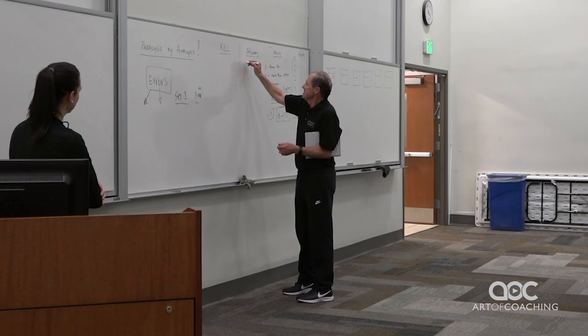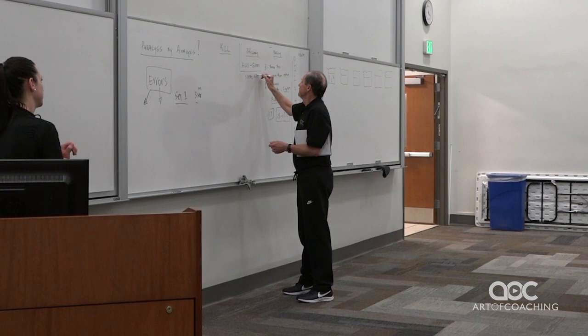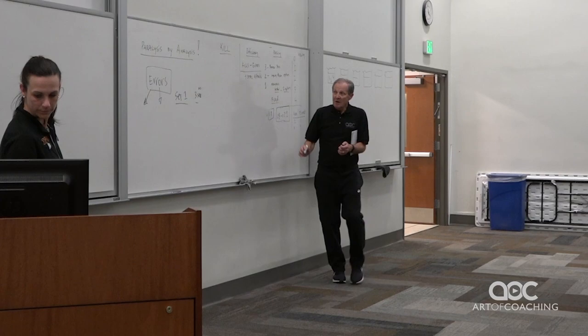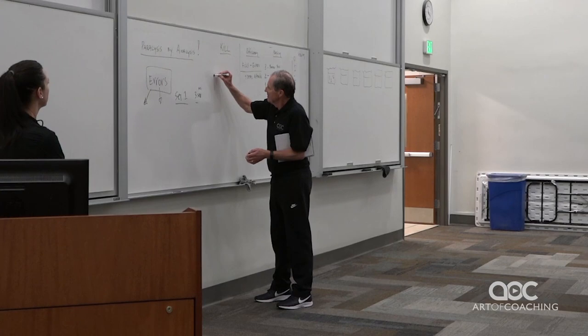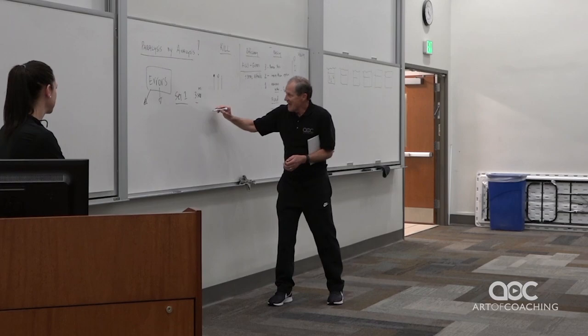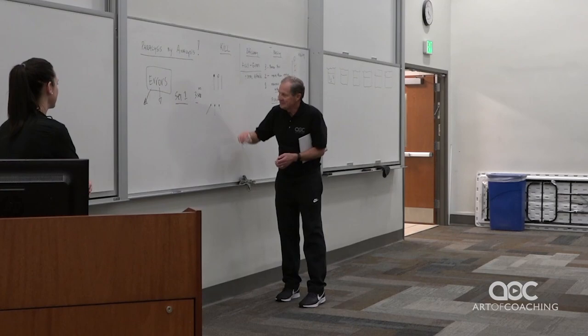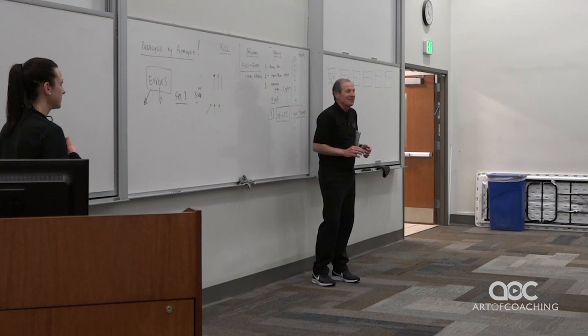Efficiency is kills minus errors over total attacks. The way I used to chart these is: this was a kill, this was an error, and this was a ball in play. I could then — if I had this, it would be a kill from the left; if I had this, a kill from the middle; kill from the right. So I could just kind of chart that for myself very quickly.